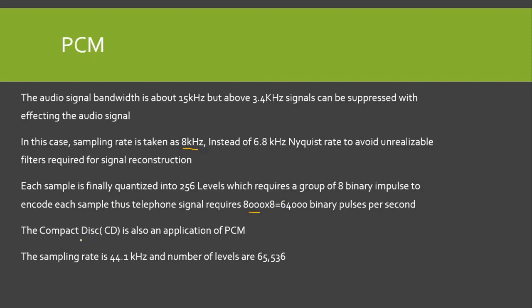Another example is the compact disc, which is another application of PCM. In this case, the sampling rate is 44.1 kHz and the number of quantized levels is 65,536.